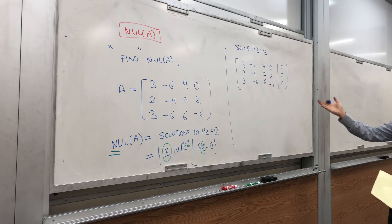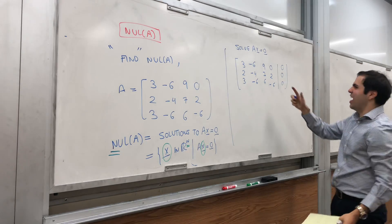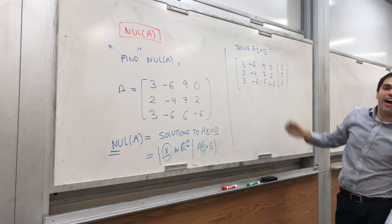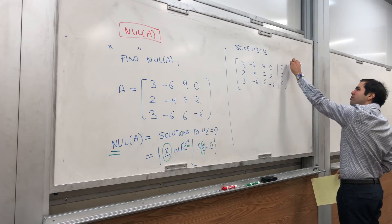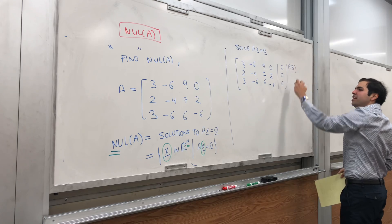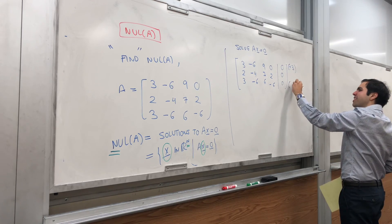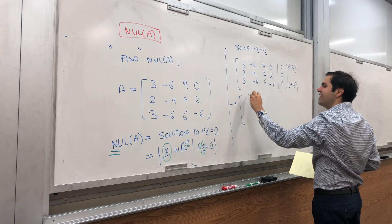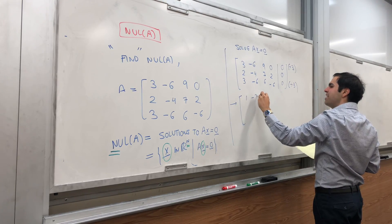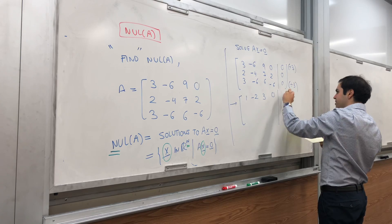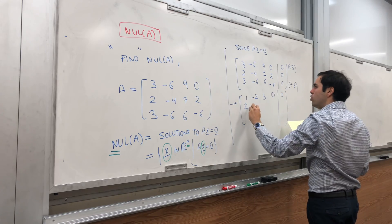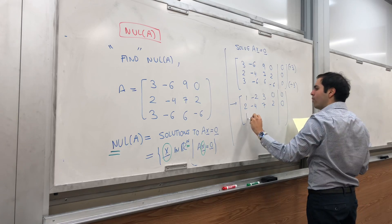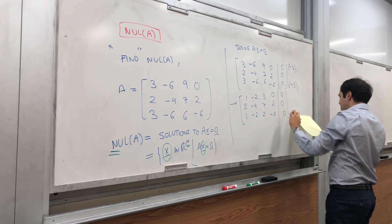Well, before we handle this, you can handle the truth. We can notice, just so we can sort of factor three out from the first row. So, let's divide by three, and also here, you can also divide by three. That's nice. It's a nice Saturday here. So, one, minus two, three, zero, zero. And then, two, minus four, seven, two, zero. And then, one, minus two, two, minus two, zero.